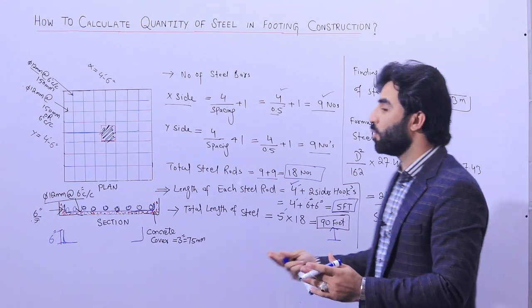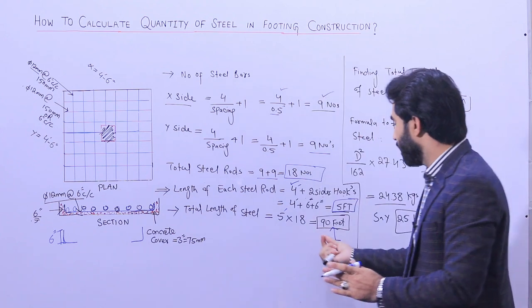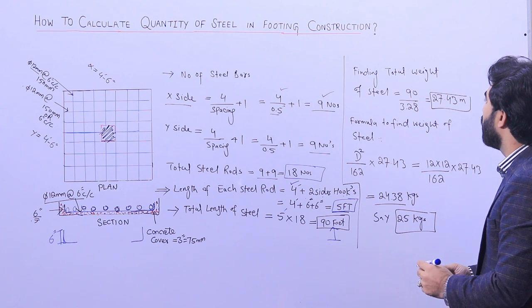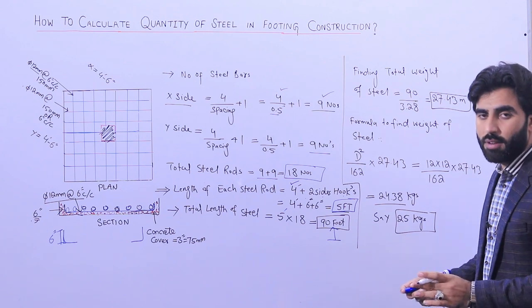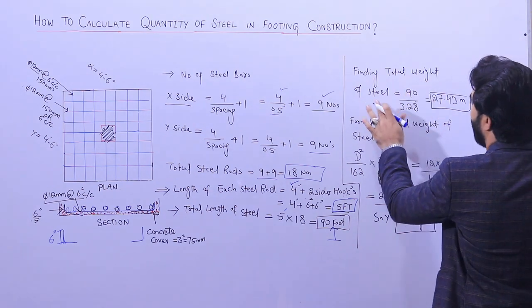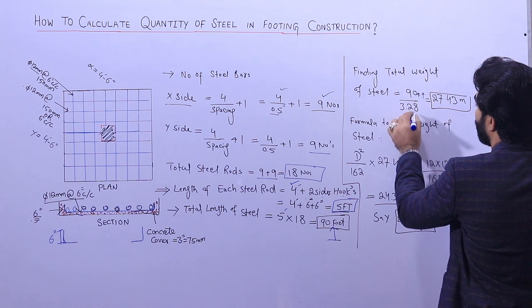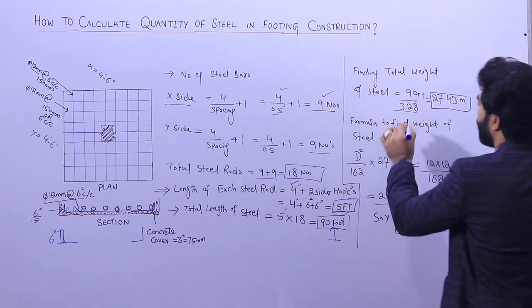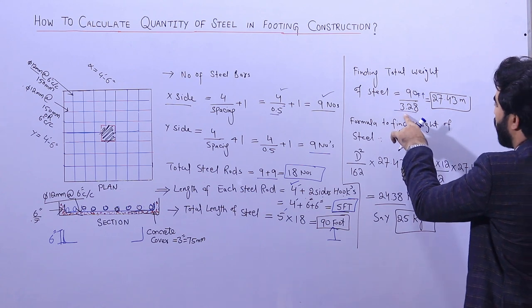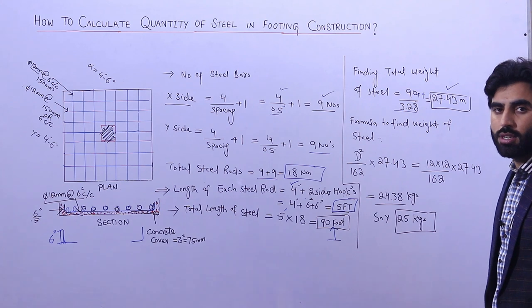If you have 5 footings, 30 footings, or 40 footings, you simply multiply 90 feet by the number of footings to get the total. Now let me find the total weight of steel for 90 feet. First, convert to meters: 90 feet ÷ 3.28 = 27.43 meters of steel rod total.